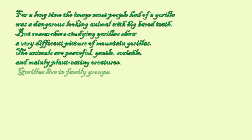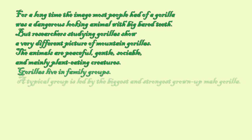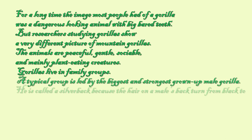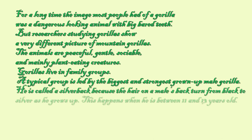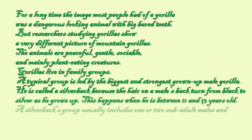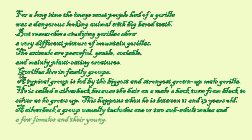Gorillas live in family groups. A typical group is led by the biggest and strongest grown-up male gorilla. He is called a silverback because the hair on a male's back turns from black to silvery gray as he grows up. A silverback's group usually includes one or two sub-adult males and a few females and their young.